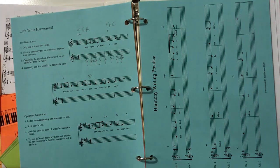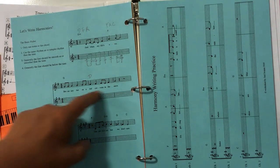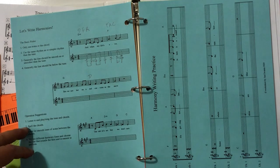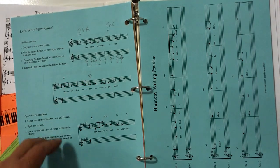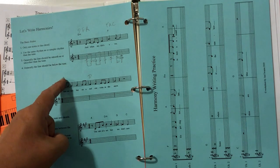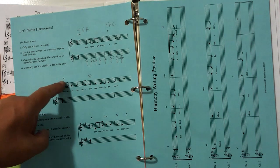And down here is maybe how you accomplish that. Listen to and play and sing the tune and the chords. Right? So you know what it sounds like. Spell the chords. Right? Look for smooth lines of notes that would take you from a note from this chord to that one. Try out different harmony lines. Choose the one that you like best. You know, by following these guidelines. You can always break rules if you know what you're doing for something that sounds better.